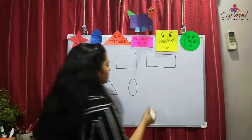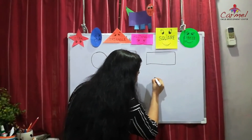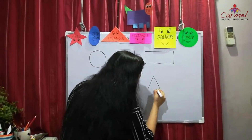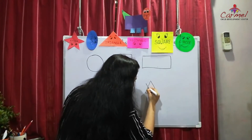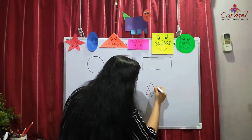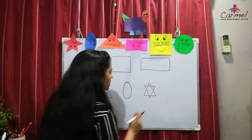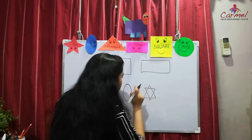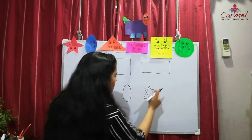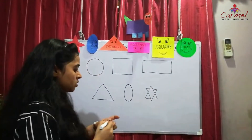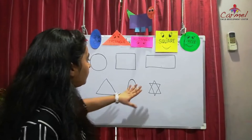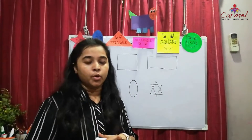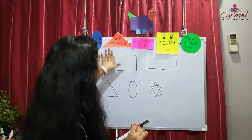Now for the star — if you draw a triangle upward and a triangle downward, the two triangles make a star. It has one, two, three, four, five, six corners. Children, draw all the shapes in your notebook and you can colour them — orange, pink, yellow — and make your book colourful!